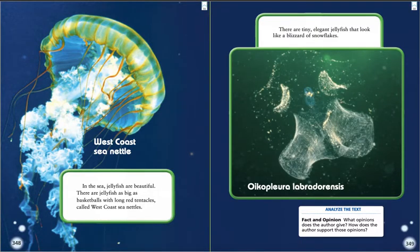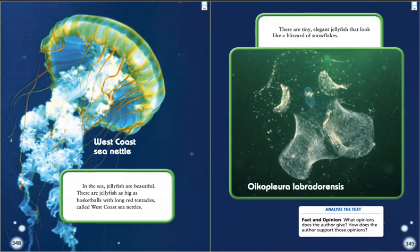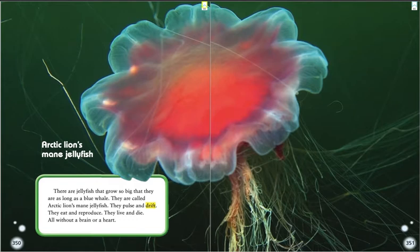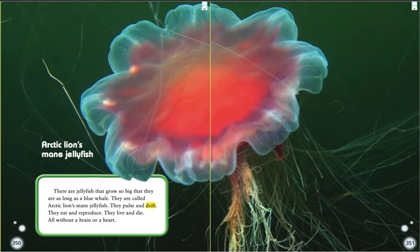In the sea, jellyfish are beautiful. There are jellyfish as big as basketballs with long red tentacles called west coast sea nettles — here's a west coast sea nettle. There are tiny, elegant jellyfish that look like a blizzard of snowflakes, called oikopleura labradorensis. There are jellyfish that grow so big they are as long as a blue whale — they are called arctic lion's mane jellyfish. They pulse and drift, eat and reproduce, live and die, all without a brain or a heart. This is the arctic lion's mane jellyfish.